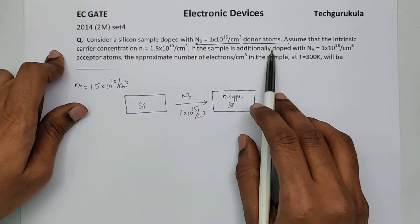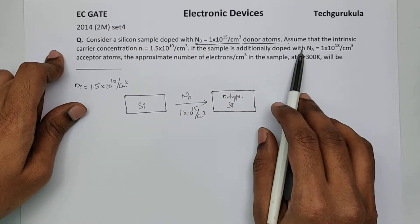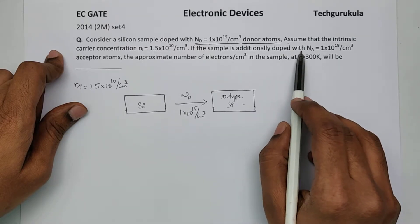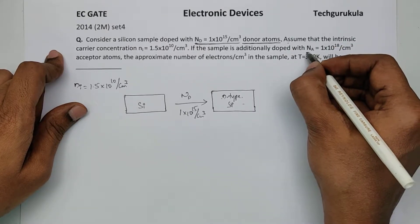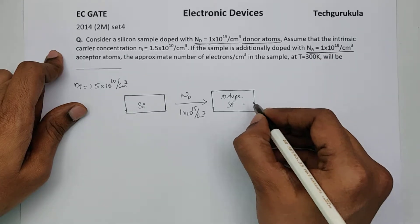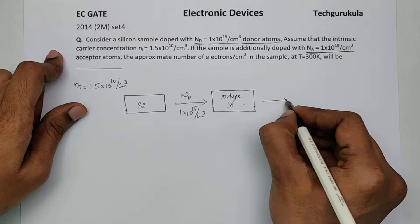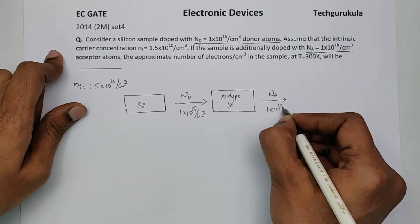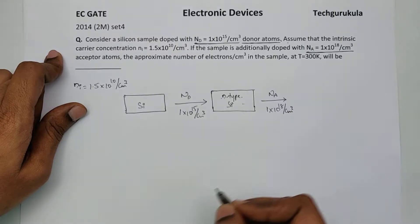If the sample is additionally doped with Na which is acceptor atoms of concentration given here, so this material is going to be doped additionally with Na which is 1 times 10 power 18 per centimeter cube.